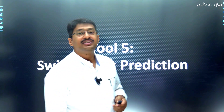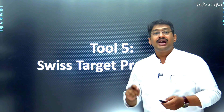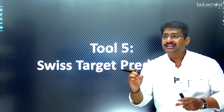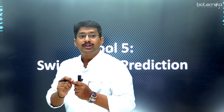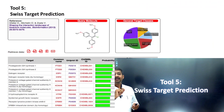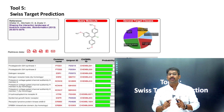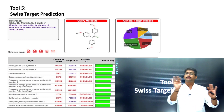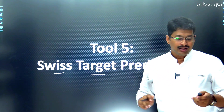The fifth tool is the Swiss Target Prediction tool. Swiss Target Prediction helps in analyzing data that is either a protein or a ligand molecule. If I have a ligand molecule, Swiss Target Prediction will predict the most probable binding towards a particular protein, and tell you whether it is a protease inhibitor or a promoter. All this information can be predicted using Swiss Target Prediction.